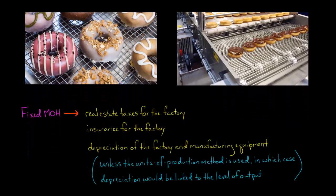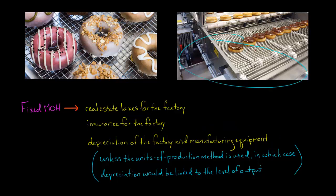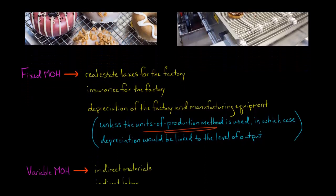Depreciation expense — whether it be for the factory itself or for the manufacturing equipment inside the factory, the machines you're using to produce those donuts — is generally part of fixed manufacturing overhead, because depreciation is not going to change based on how many donuts you make. However, there is an exception: if you use the units of production method for depreciation, depreciation would be linked to the level of output and would then be a variable component of manufacturing overhead. But generally speaking, depreciation is part of the fixed component.